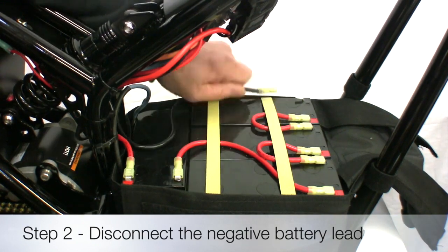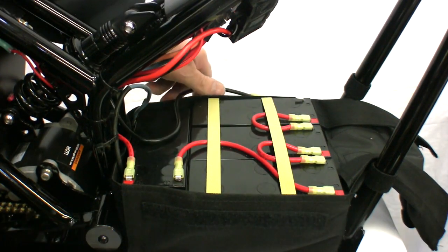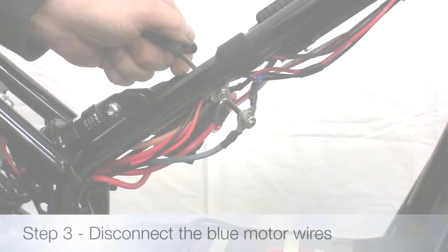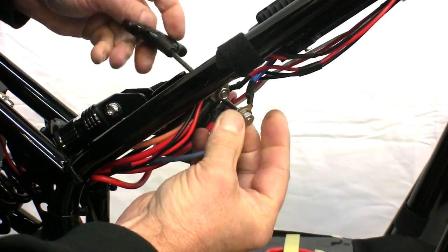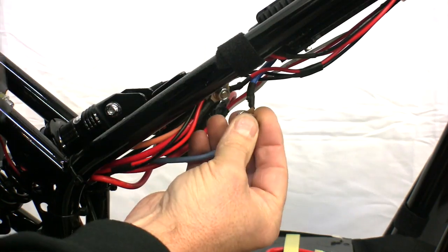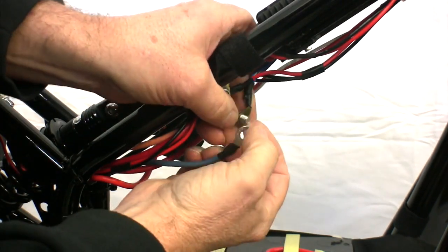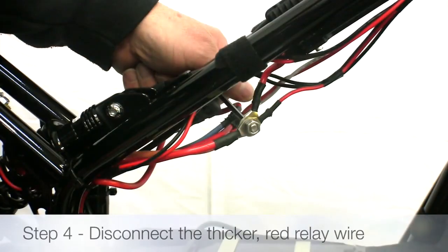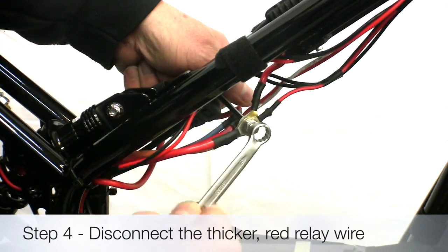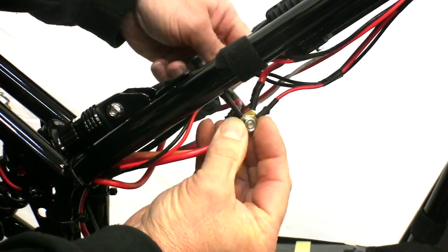Disconnect the black negative battery wire from the negative battery terminal. Undo the nut and bolt connecting the blue motor wires and separate the wires so they cannot touch one another. Undo the nut and bolt connection and disconnect the thick red wire running to the relay.